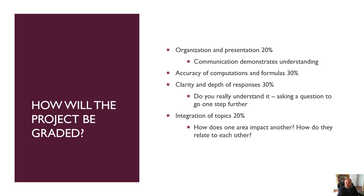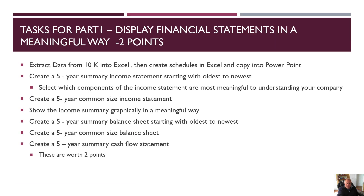How do you lay it out? Is there a logical model you can use to explain things? Part one is worth two points because it should be fairly basic for a 315 course — in 311 you hopefully learned how to do all of this. Extract the data from the 10K into Excel, then create schedules in Excel and copy into PowerPoint. Create a five-year summary income statement starting with the oldest to the newest, because we're going to forecast out. Start with the oldest, move to the right with the newest, and you'll be able to create trends.